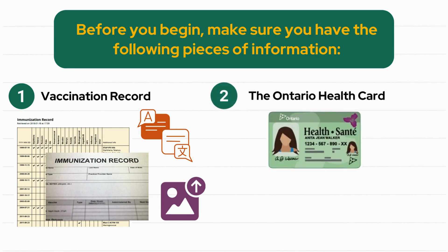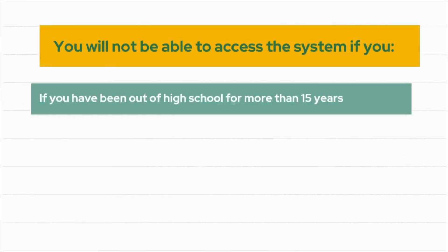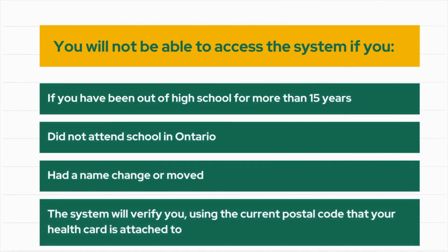The second is the Ontario Health Card of the individual whose records are being submitted. If you do not have a current Ontario Health Card, you will not be able to access the system.